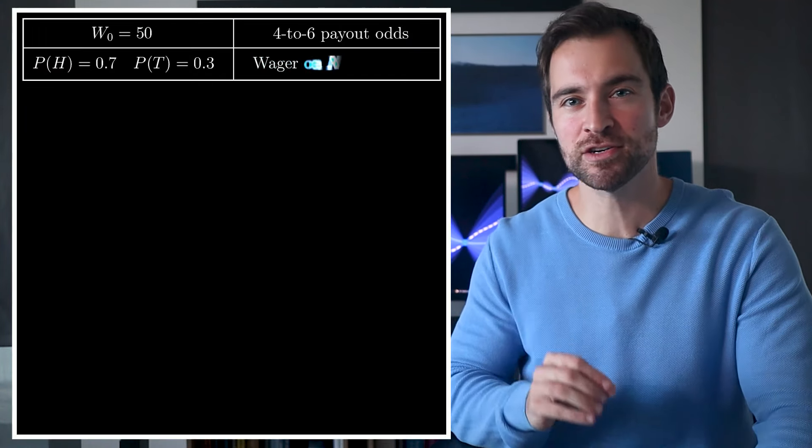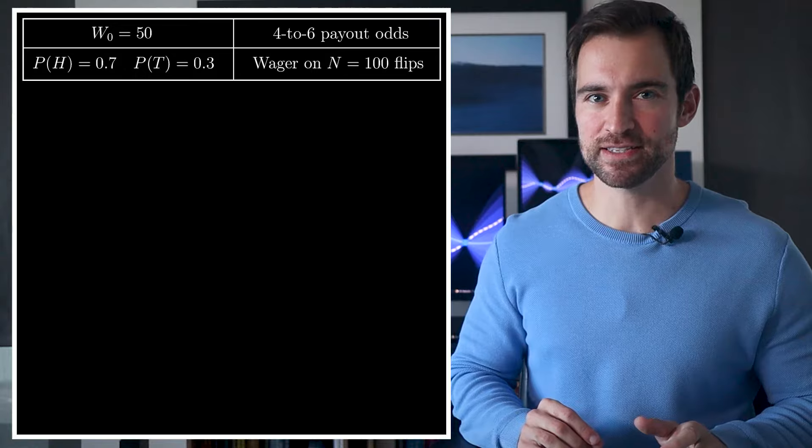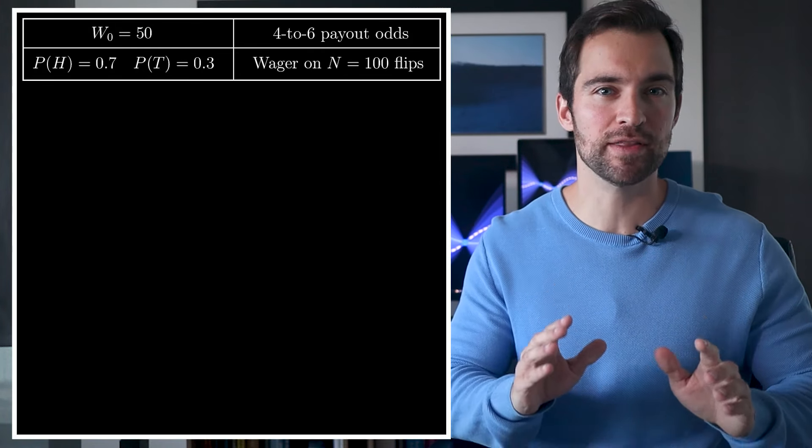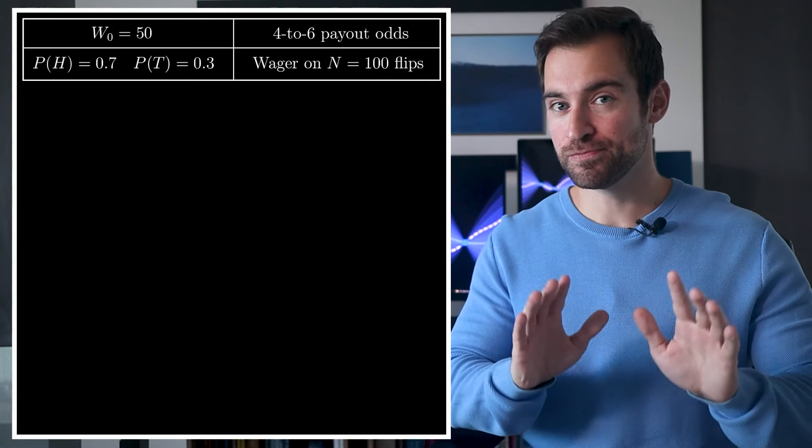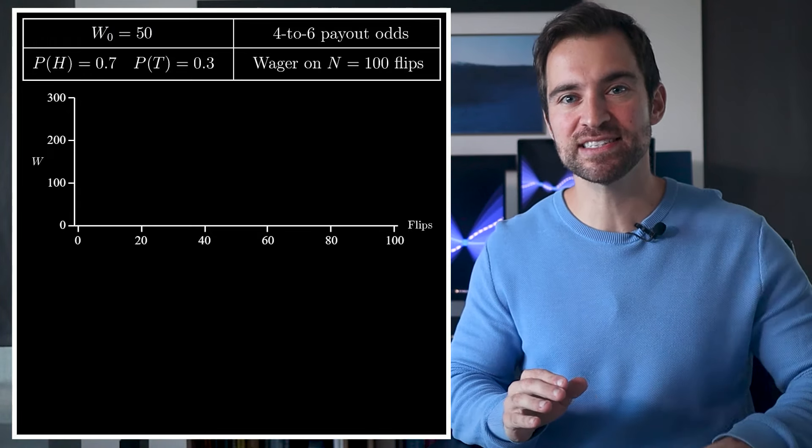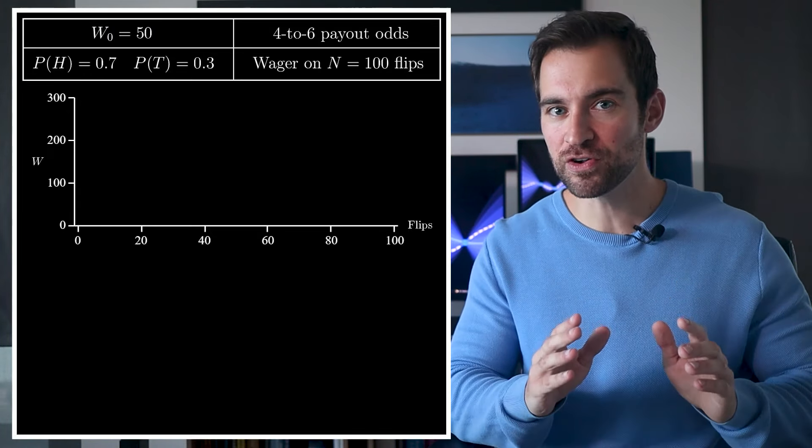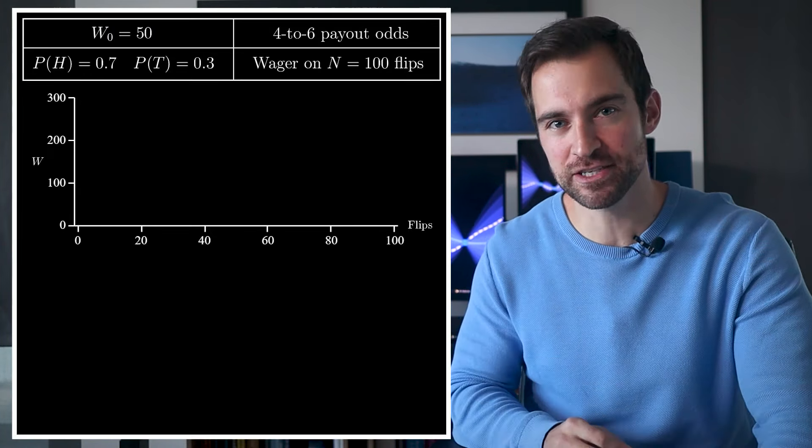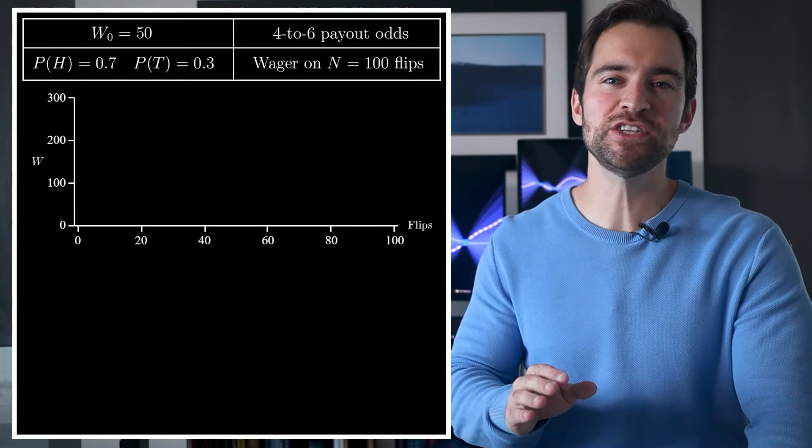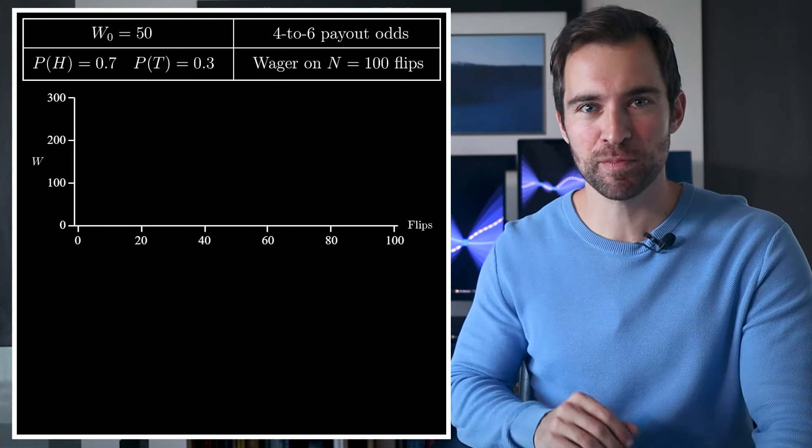So let's say you get 100 flips. How would you play this game? How would you size your wager as you flip and your wealth changes? Whatever your strategy is, we can picture it like this. The horizontal axis tells us which flip we're on, and the vertical axis tells us our wealth after each flip. Okay, now let's try a strategy.